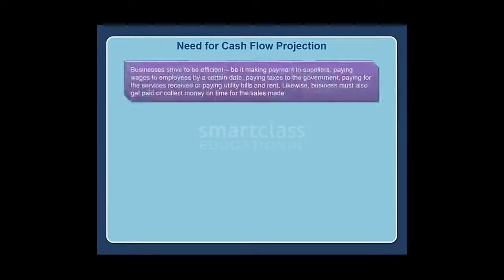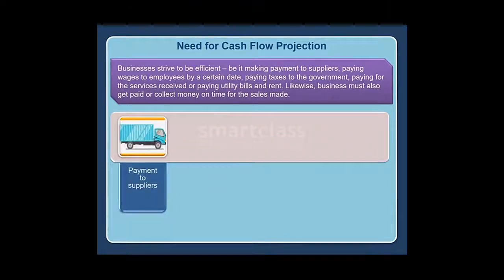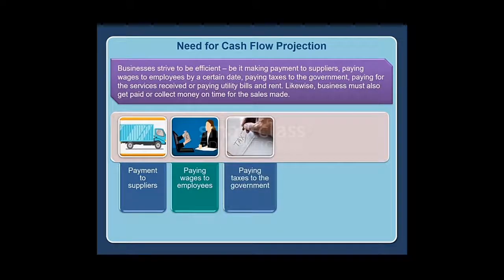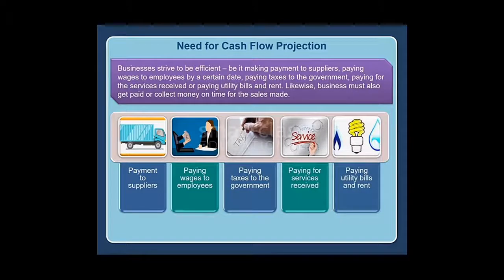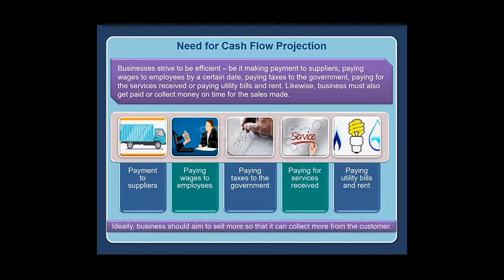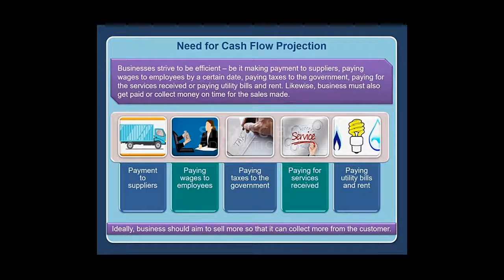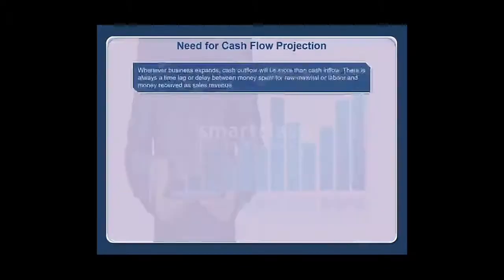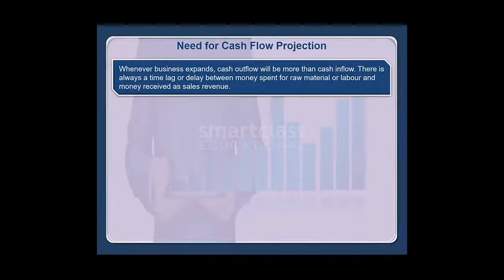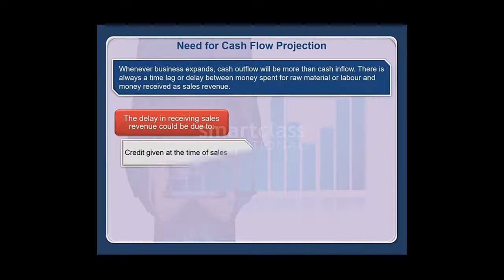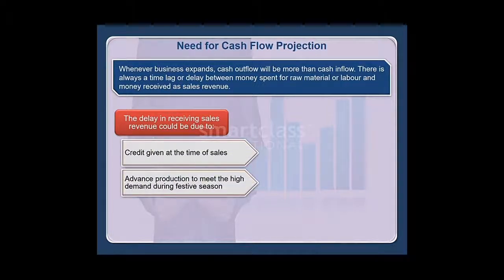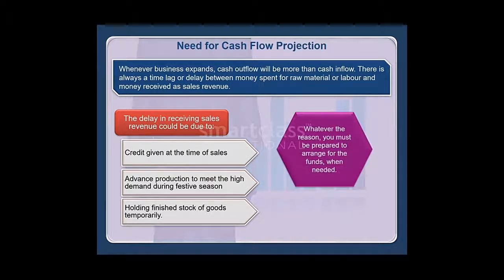Businesses strive to be efficient — making payments to suppliers, paying wages to employees by a certain date, paying taxes to the government, paying for services received, or paying utility bills and rent. Likewise, a business must also collect money on time for the sales made. Whenever a business expands, cash outflow will be more than cash inflow. There is always a time lag or delay between money spent for raw material or labor and money received as sales revenue. The delay could be due to credit given at the time of sales, advance production to meet high demand during festive season, or holding finished stock of goods temporarily. You must be prepared to arrange for the funds when needed.